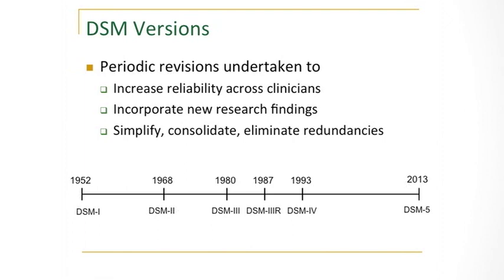You could go to one clinician, get one diagnosis, and somebody else would give you a different diagnosis. Even in DSM-1 and 2, there were still no operational criteria — just paragraphs describing conditions, without saying you had to have three out of this list and two out of that list. That first came in DSM-3 in 1980. The revisions aim to incorporate new research findings and eliminate redundancies and overlaps that contributed to unreliability of diagnosis.